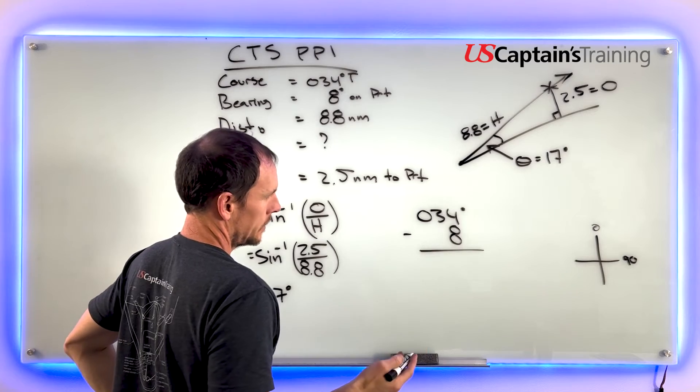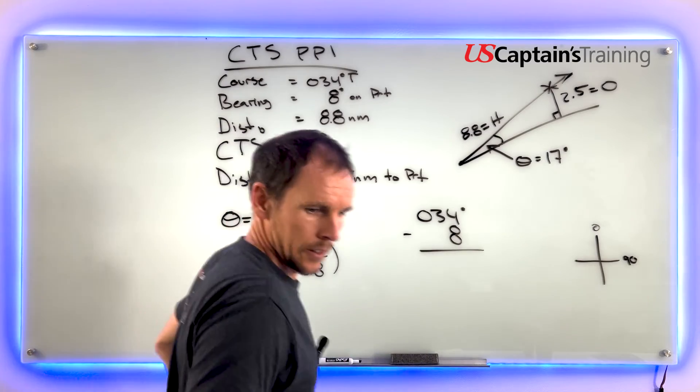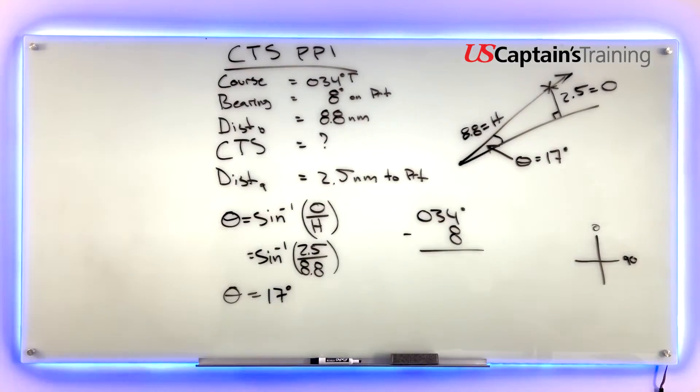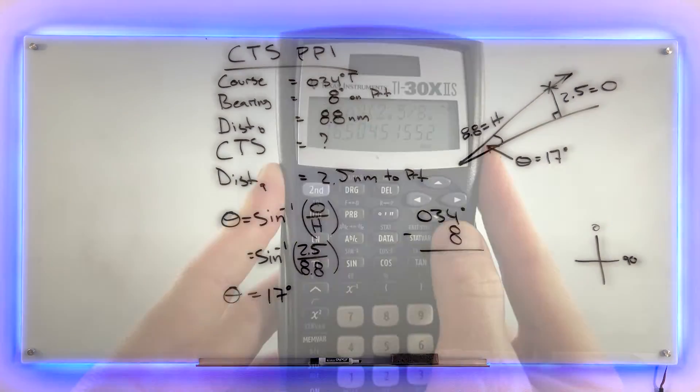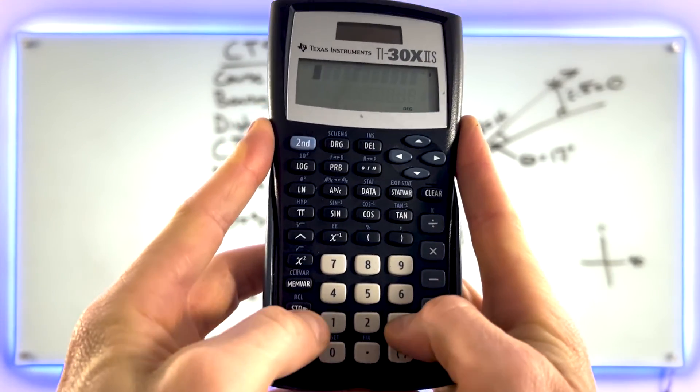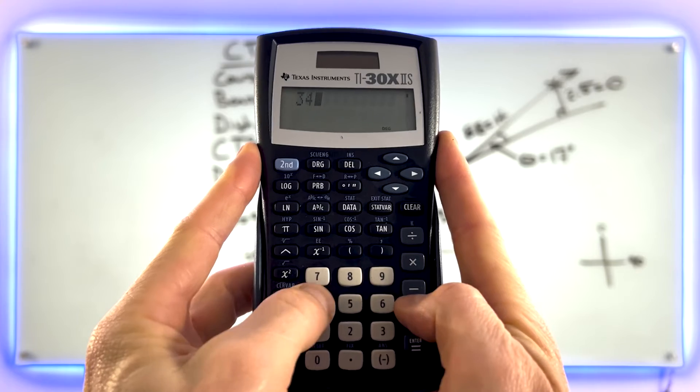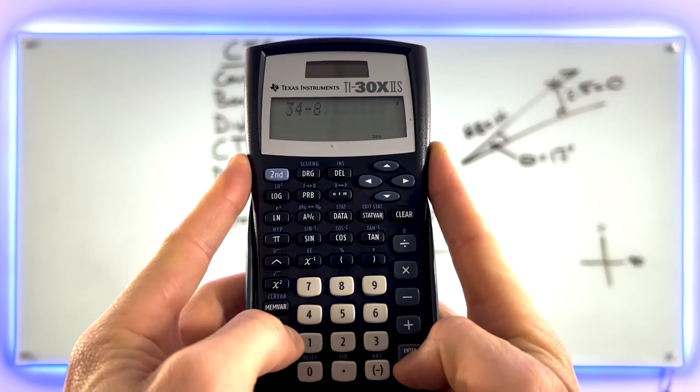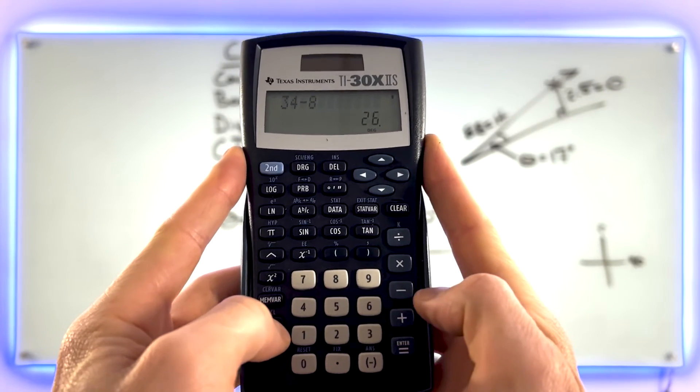34 minus 8 - let's put it in the calculator. 34 minus 8 equals 26 degrees.